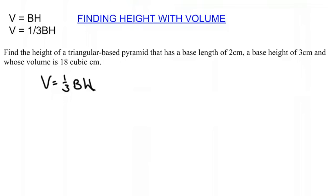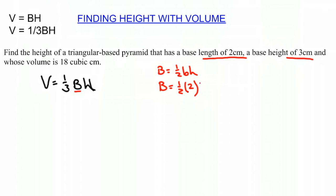We have to figure out what the base area of our triangle is. Remember that the base area of a triangle equals one-half base times height. So the base area is one-half times 2 times 3. Note that this little h — the height of the base — is different than the capital H, which is the height of the actual pyramid.